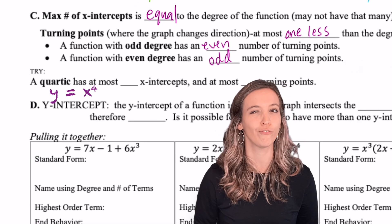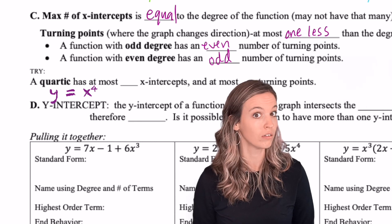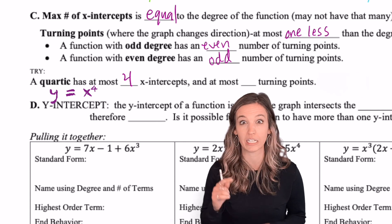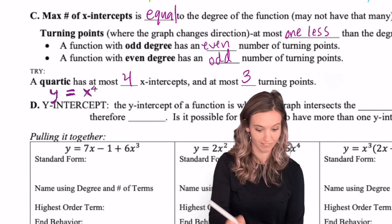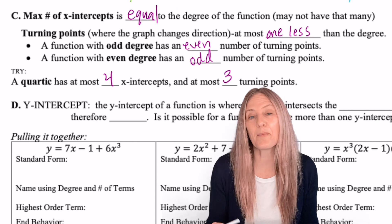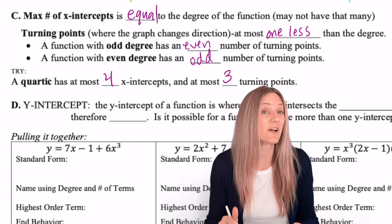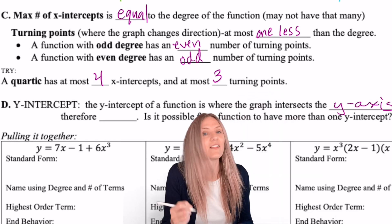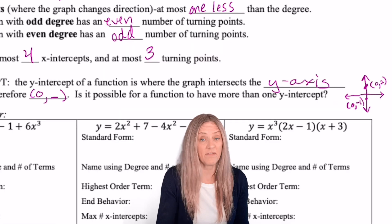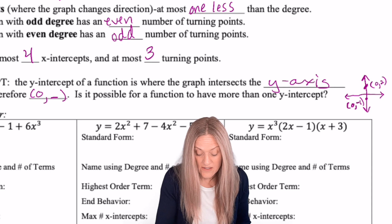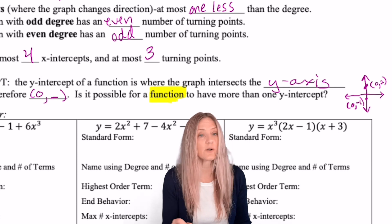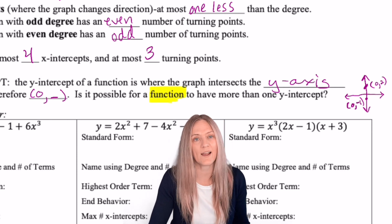Let's try a quartic — x to the fourth power. It has at most four x-intercepts and at most three turning points — one less than the degree. Does that guarantee four x-intercepts and three turning points? No — at most. We already know about y-intercepts: the y-intercept is where the graph intersects the y-axis, so the x-coordinate is always zero. Is it possible for a function to have more than one y-intercept? No — a function can only have one y-intercept, since it must pass the vertical line test.